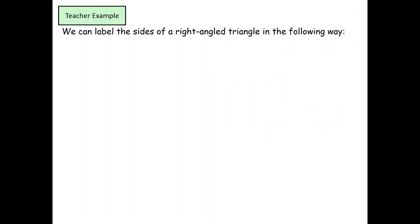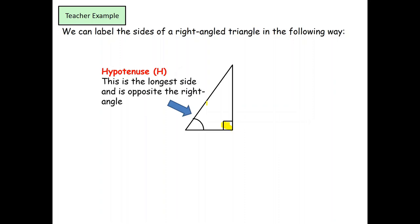Before we start to use the trigonometric functions, we need to be able to label up a right angled triangle. So, here we have a triangle. The side that is opposite to the right angle, so there's my right angle. The side that's opposite is known as the hypotenuse, the longest side of the triangle.